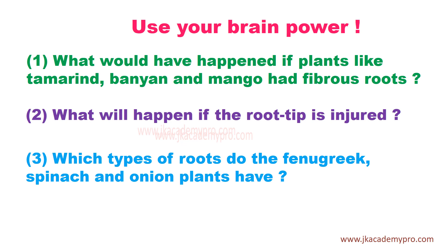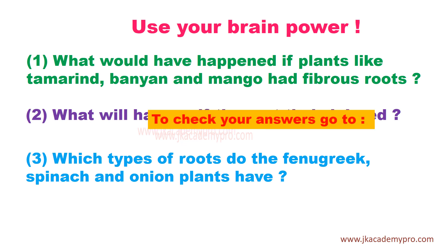Use your brain power and reflect on these questions: First, what would happen if plants like tamarind, banyan, and mango had fibrous roots instead of tap roots? Second, what will happen if the root tip is injured? Third, which type of roots do fenugreek, spinach, and onion plants have? Think about all these answers, and to check them, visit our website at www.jkacademypro.com.